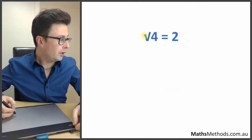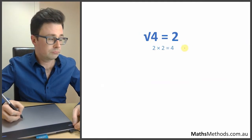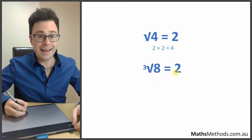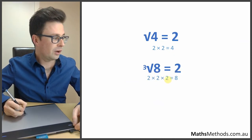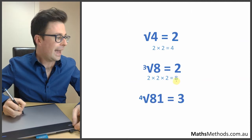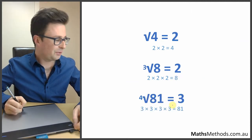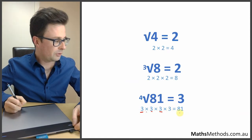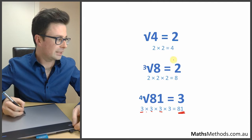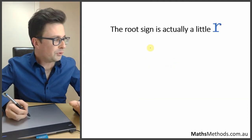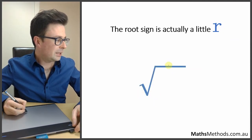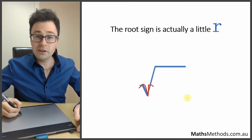Now, roots. The square root of 4 is 2 because 2 times 2 equals 4. The cube root of 8 is 2 because 2 times 2 times 2 gives 8. The fourth root of 81 gives 3, because 3 times 3 times 3 times 3 equals 81. Interestingly, the root sign is actually a little r — you can see how it evolved from the letter r into the modern root symbol.